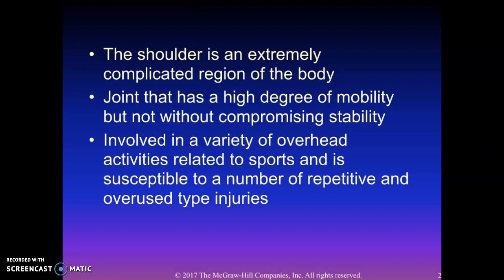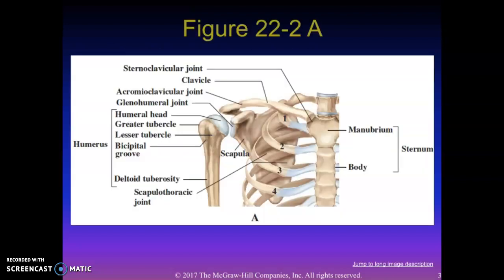If you think about other ball and socket joints, they're more like a softball sitting inside of a bowl — much more stable than sitting on a plate. Here's a picture: the humeral head is like the softball and the glenoid cavity is like the plate. You can see the humeral head is not really locked inside that joint at all; it can very easily move up and down, forward and back. So the shoulder relies a lot on the musculature and the ligaments to hold it in place, because the bony anatomy doesn't really do that.